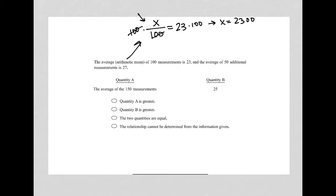Okay, the next part of this sentence says, and the average of 50 additional measurements is 27. So I'm going to do the same process that I just used and say, well, the sum of those 50 measurements, I don't know what that is, so I'm going to call it y. But I do know that when I divide by 50 to find the average, the question is telling me that that average is equal to 27.